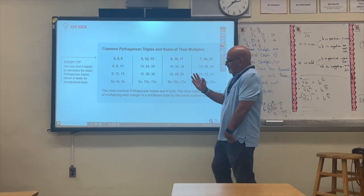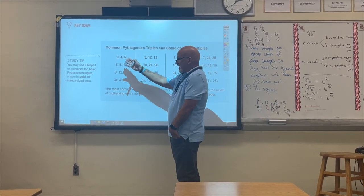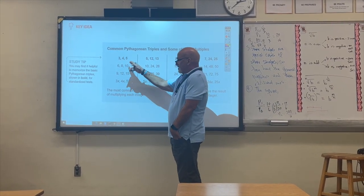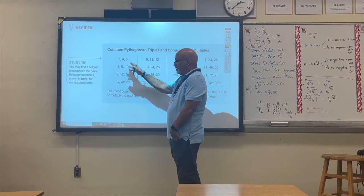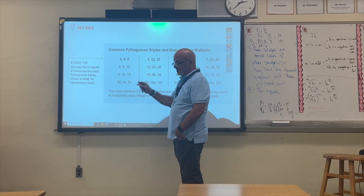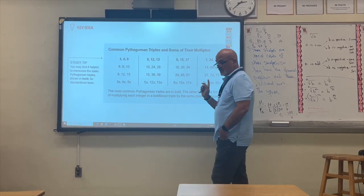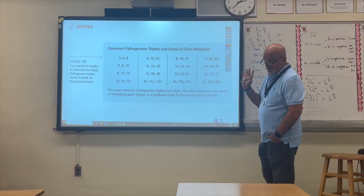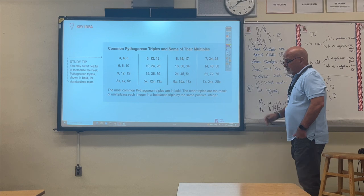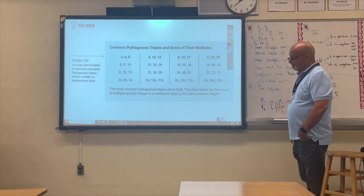It's important to keep in mind these combinations of sides to save time on standardized tests. If you see that a triangle has side lengths of 3, 4, and 5 — or multiples of them — you can immediately say the triangle is right. That will definitely help you save time.